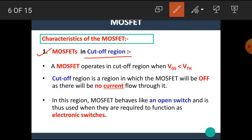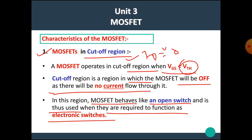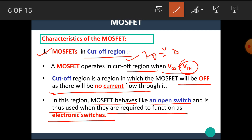First, MOSFET in cut-off region. A MOSFET operates in the cut-off region when VGS is less than VTH, meaning the gate-to-source voltage is less than the threshold voltage. In the cut-off region, the MOSFET will be off as there is no current flow through it — the drain current ID is zero. In this region, the MOSFET behaves like an open switch and is used when required to function as an electronic switch.